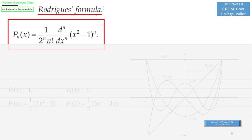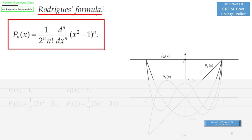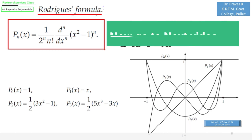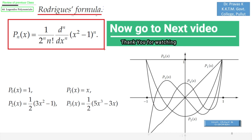Then in the previous class itself, we also found some first few Legendre polynomials using this Rodriguez formula: P₀(x) = 1, P₁(x) = x, and P₂(x) and P₃(x). So here you can see the graphs of first few Legendre polynomials. You can also note that the degree of the nth Legendre polynomial is n.